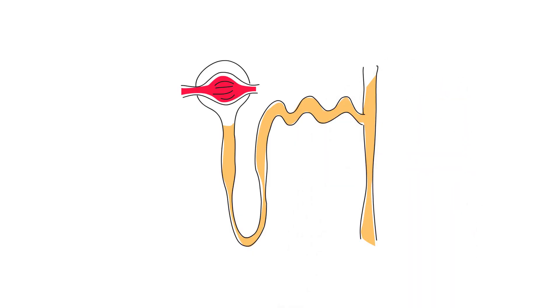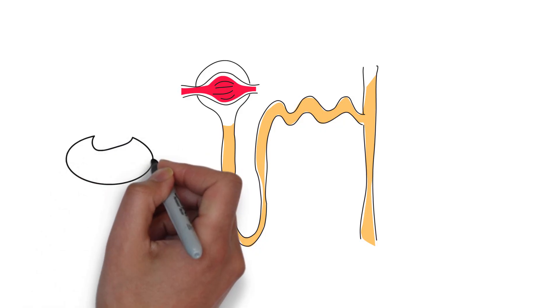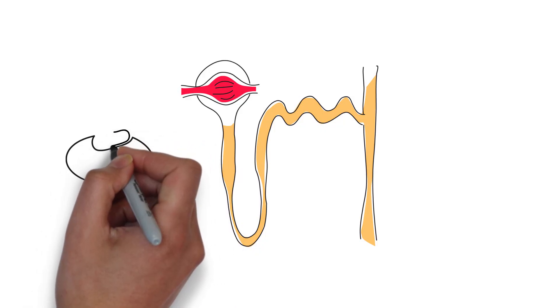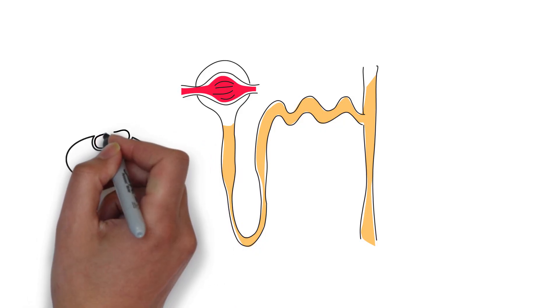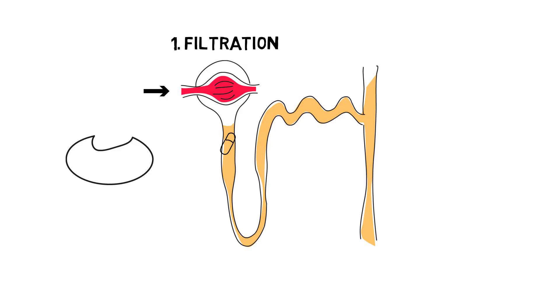A drug first encounters the nephron when it travels through the afferent arteriole to the glomerulus. The glomerulus functions as a filter. Free drug, meaning unbound to plasma protein, of small molecular size can pass through and will enter the proximal tubule.